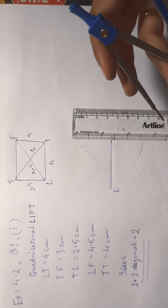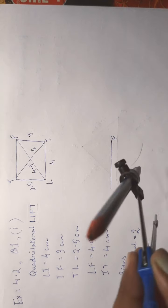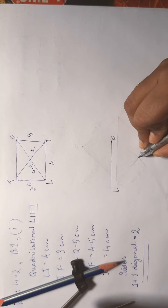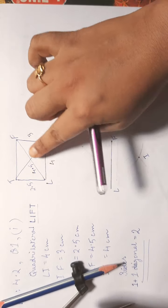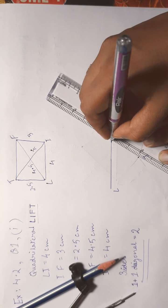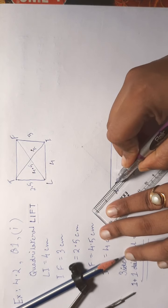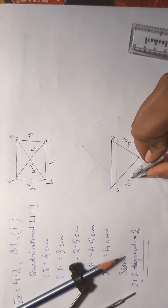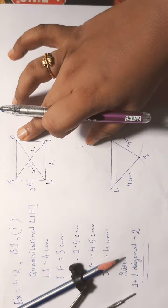Arc is drawn. Now LI is 4 centimeters, so we take the measurement 4 centimeters and draw another arc. The two arcs intersect — that intersection point is I. Now we will join the lines: IF is 3 centimeters and LI is 4 centimeters, and LF is 4.5 centimeters.